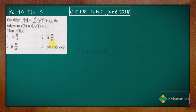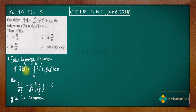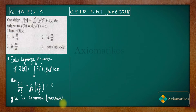First, we will use the Euler-Lagrange equation — the basic tool from calculus of variation — to find the extremals for this functional J[y]. The meaning of extremal is that the function we calculate can be a maximum or a minimum; we don't have an exact answer yet. So there is a little catch in this question, which we will understand as we proceed.